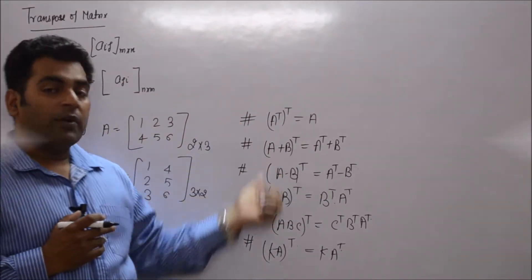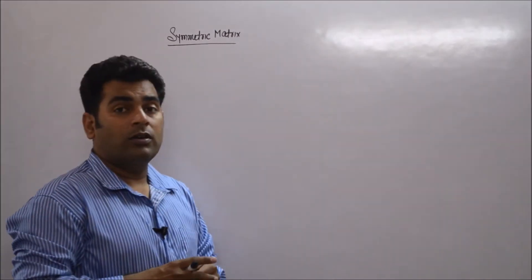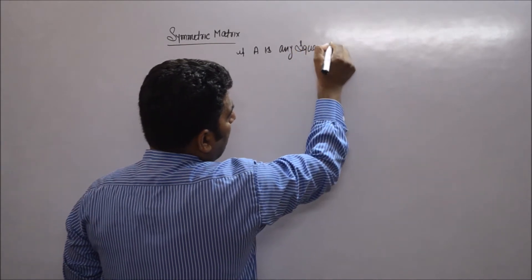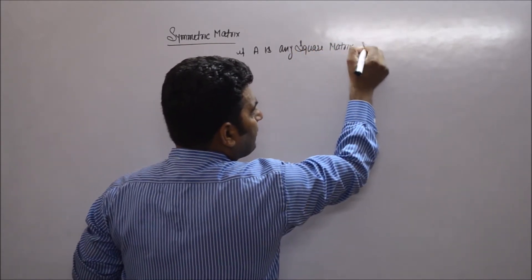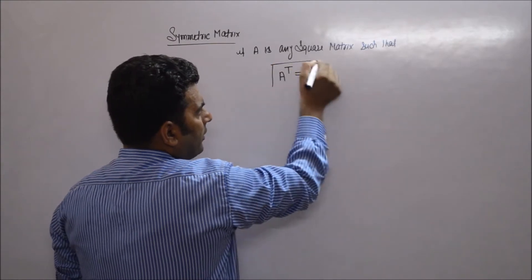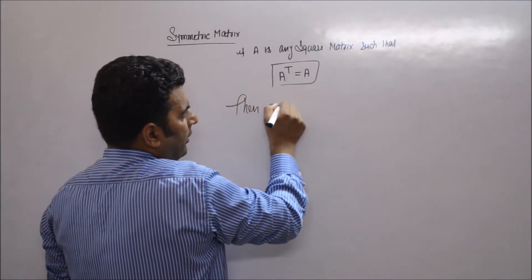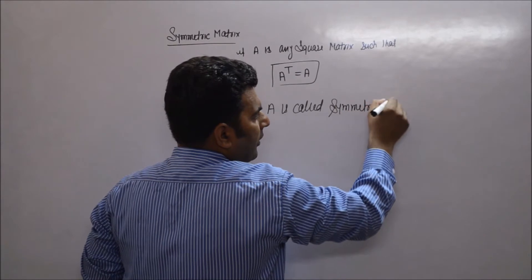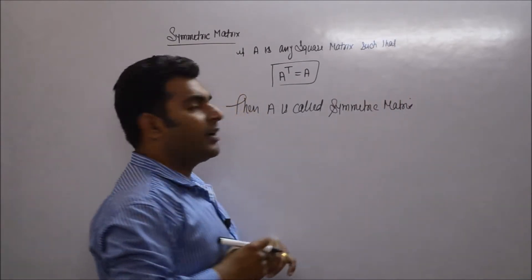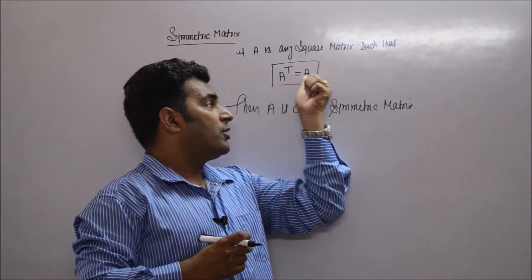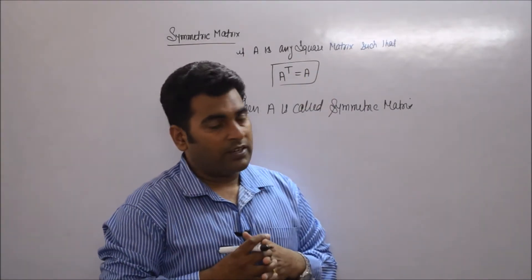Now I am defining a new concept — the symmetric matrix. If A is any square matrix such that Aᵀ = A, then A is called a symmetric matrix. Since A is a square matrix, its transpose will be of the same order, and if Aᵀ equals A, the matrix is said to be symmetric.